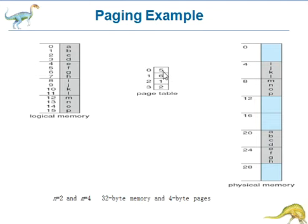How are you getting 23? Here, page 0, what is the frame number? 5. 5 times each page having 4 bytes, 5 times 4 plus the offset value of D, that is 3. So you are getting 23 physical address.